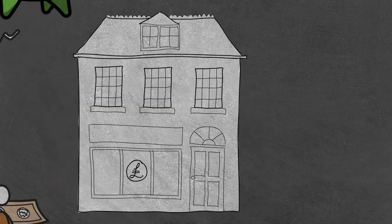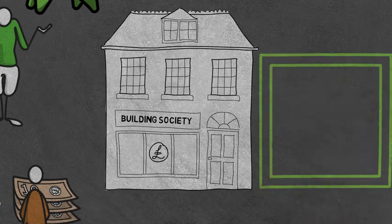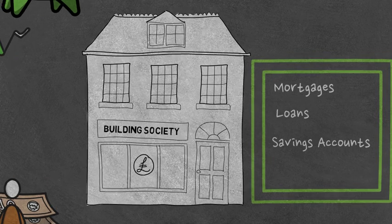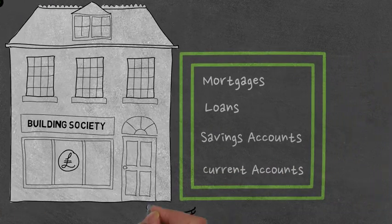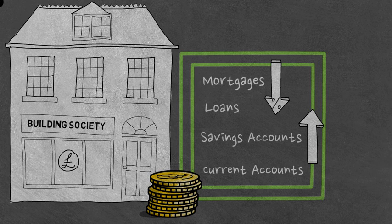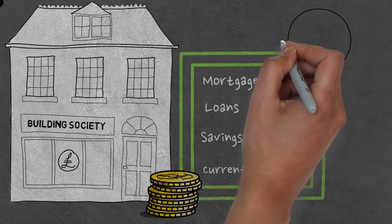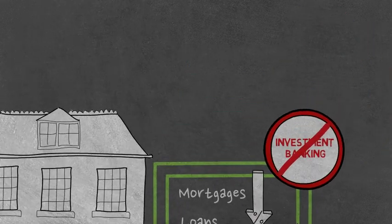Building societies were originally set up to help build houses. Like banks, they offer mortgages, loans and savings accounts. Most big ones you see on the high street also offer current accounts. Unlike banks, their profits benefit the members or customers through better borrowing or savings rates. They may borrow on the money markets, but don't get involved in risky investment banking.